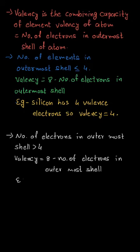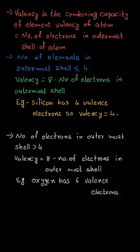For example, in case of oxygen, we know that oxygen has six valence electrons, so valency of oxygen can be determined by eight minus six, which equals two.